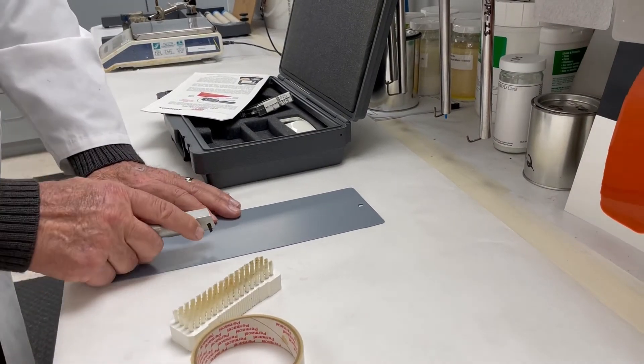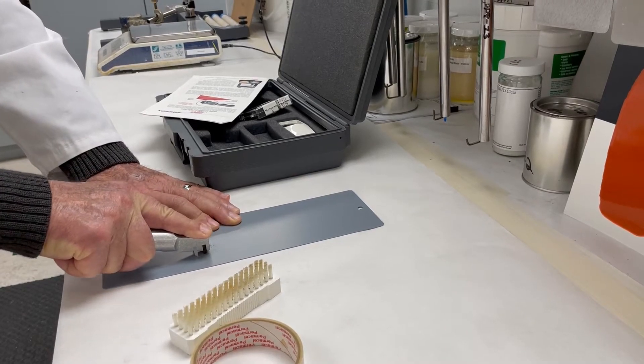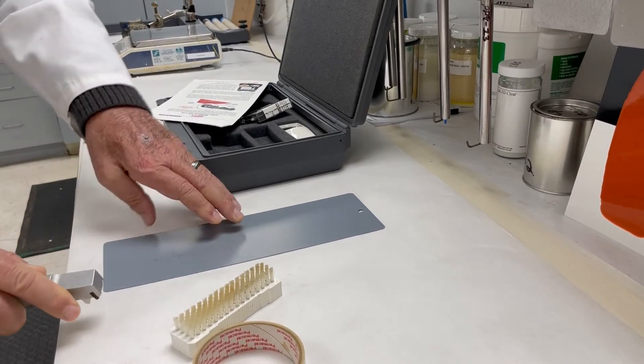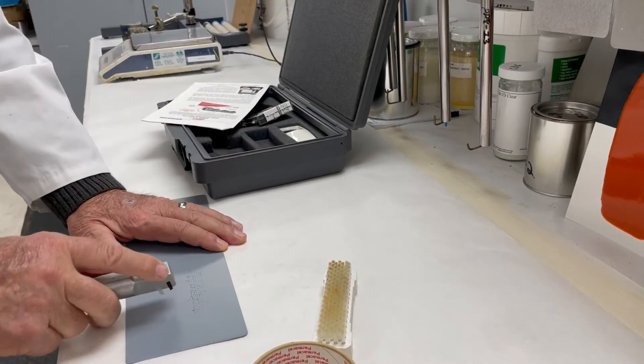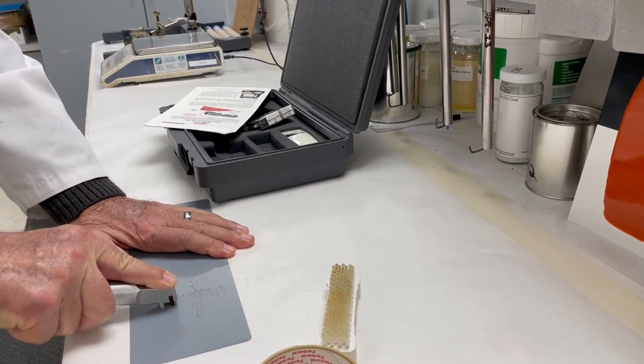So first step, you'll pull the part down, make your cuts, and then you're going to go perpendicular to that. Make another set of cuts.